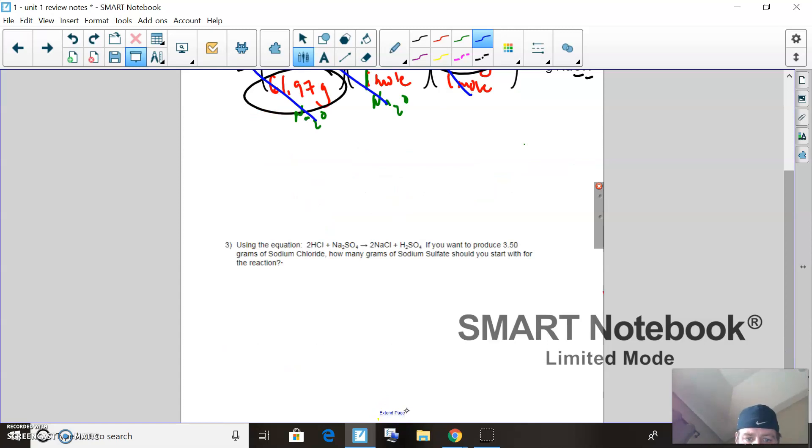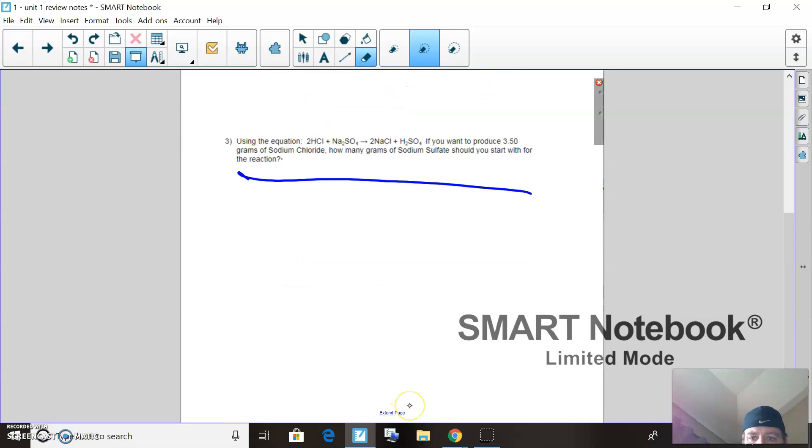Go ahead and do this problem here using the equation: two moles of hydrochloric acid plus sodium sulfate. If you want to produce 3.5 grams of sodium chloride, how many grams of sodium sulfate should you start with for the reaction? Whatever you're given goes on the left, so 3.50 grams of sodium chloride is what I want to make. I want to figure out how many grams of sodium sulfate I need.